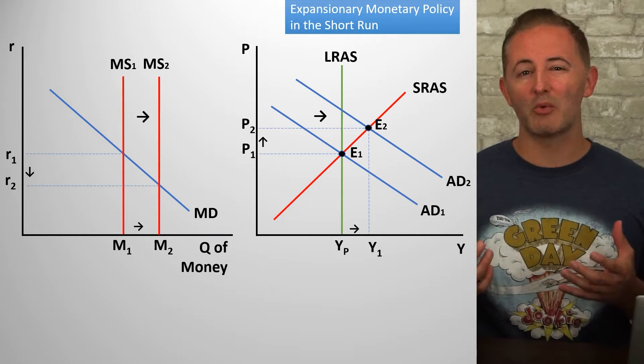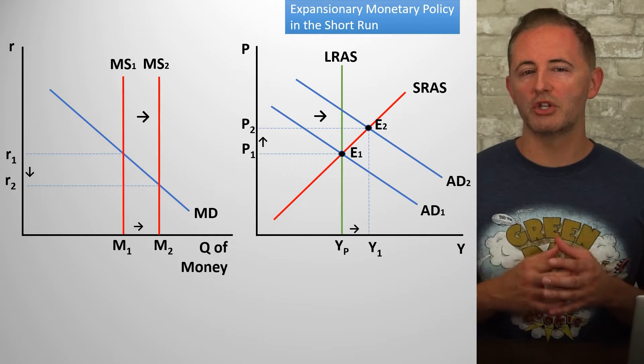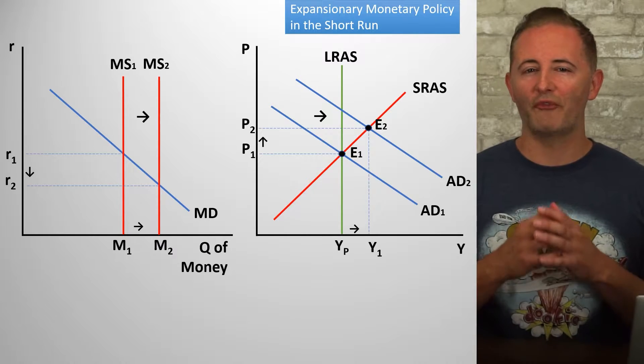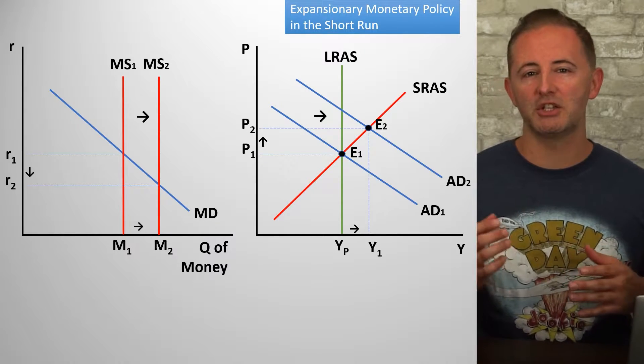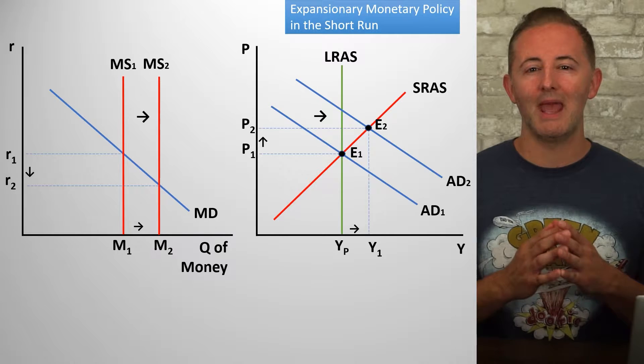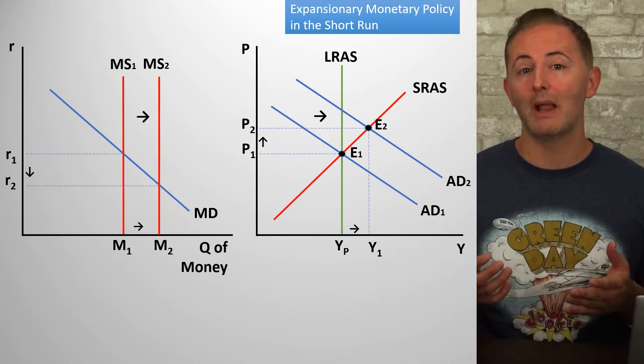This is where we stopped the story originally. The first thing to point out is that an expansion of the money supply can increase real output in the short run. Keynesians care more about the short run, and so to them, this short-run increase in real output justifies the policy.